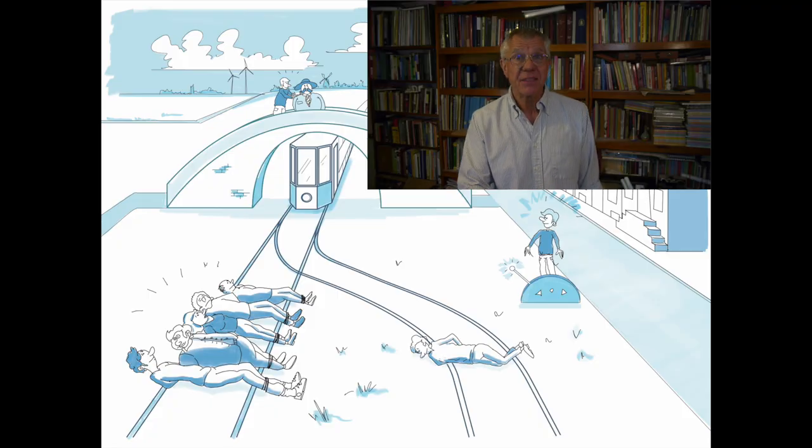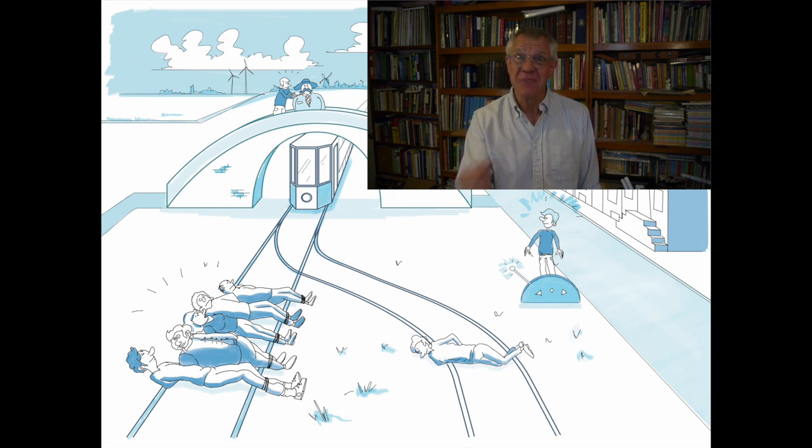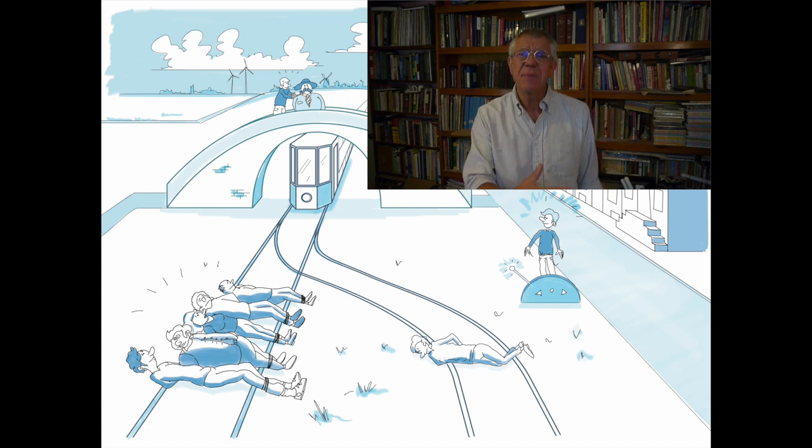When you look at a problem like the trolley problem, for example, you realize that people make decisions about whether to flip the switch or not depending upon all sorts of factors that tend to be left out of most ordinary moral theories. So even though utilitarianism, Kantianism, virtue ethics, and other moral approaches can be helpful, they're really incomplete guides — they are bounded too. We have some principles and theories that can help us, but they have limited power themselves.